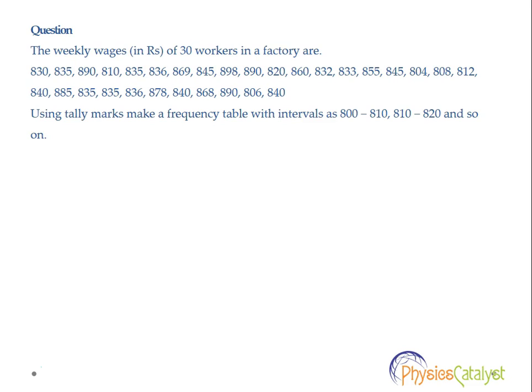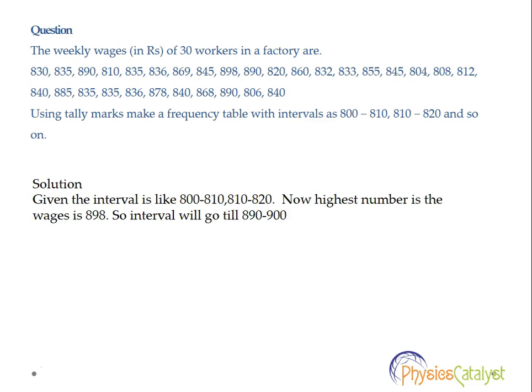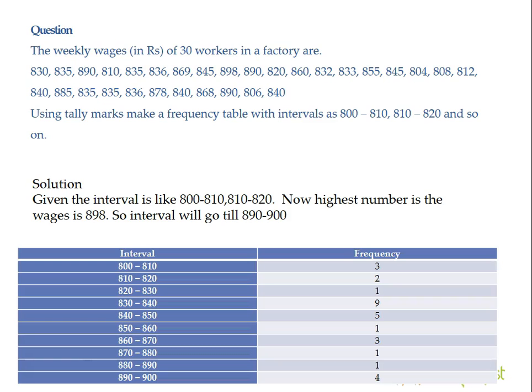This is a question of group frequency distribution, and we need to first create the group frequency distribution table. Given the intervals start at 800 to 810, 810 to 820, and since the highest number in the wages is 898, the intervals will go all the way up to 890 to 900. Now, using tally marks, let's put the wages and the workers into the table. The intervals are 800 to 810, 810 to 820, 820 to 830, and so on till 890 to 900.